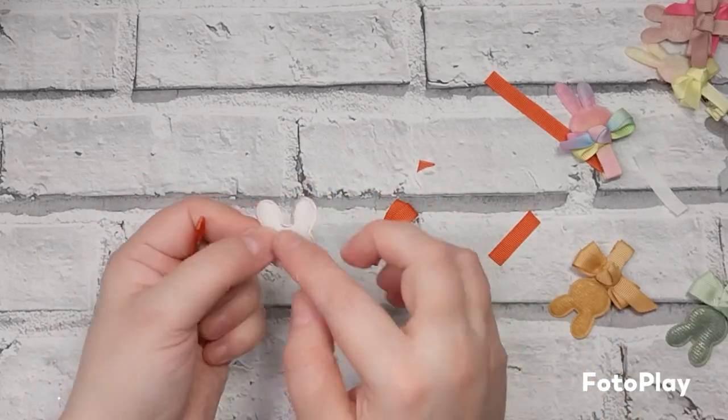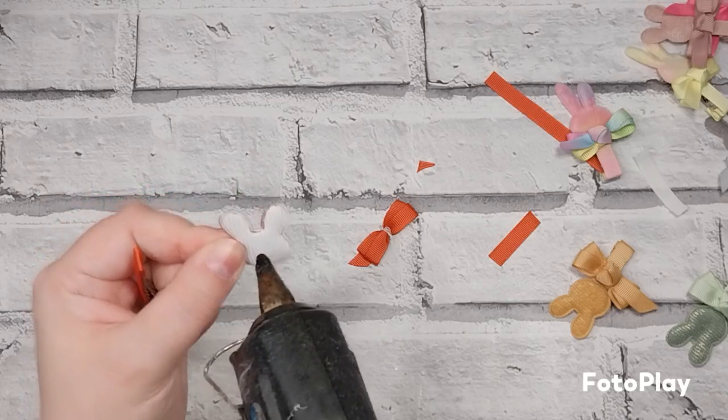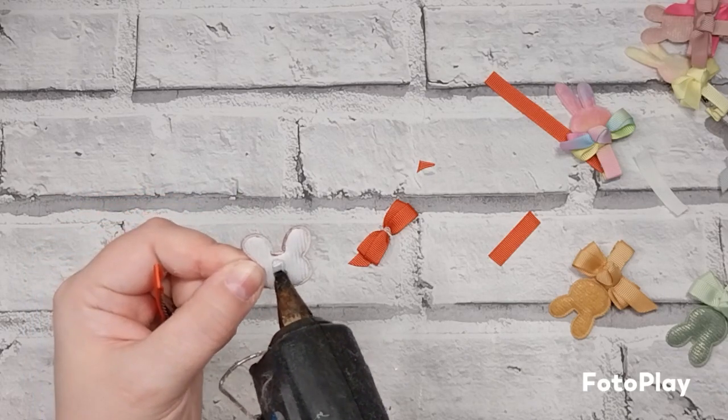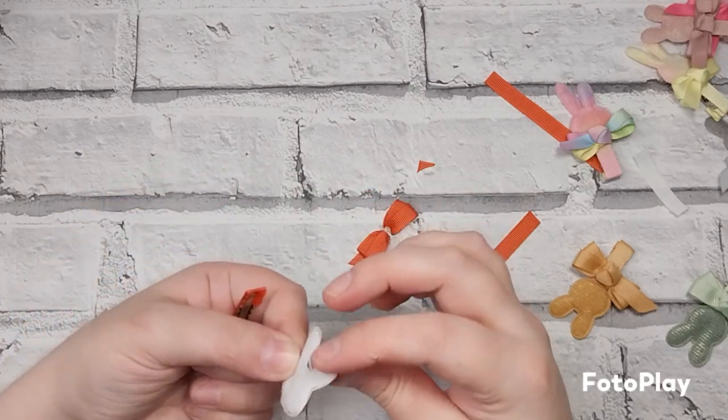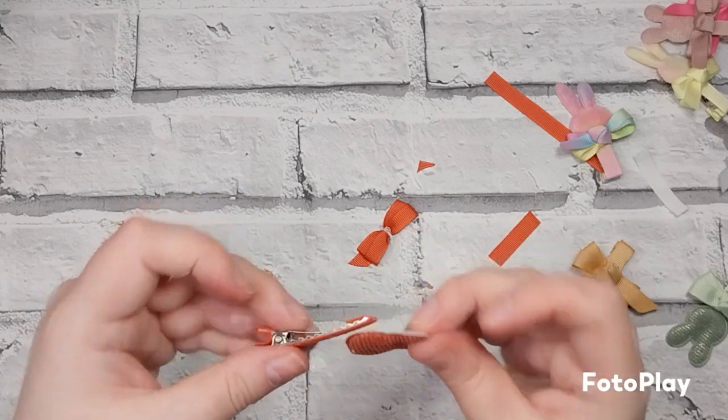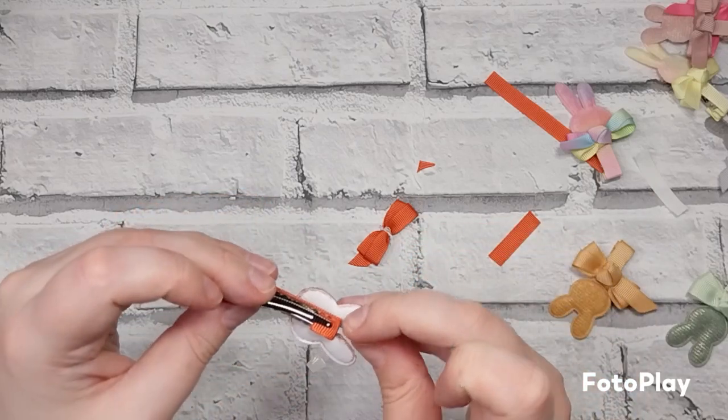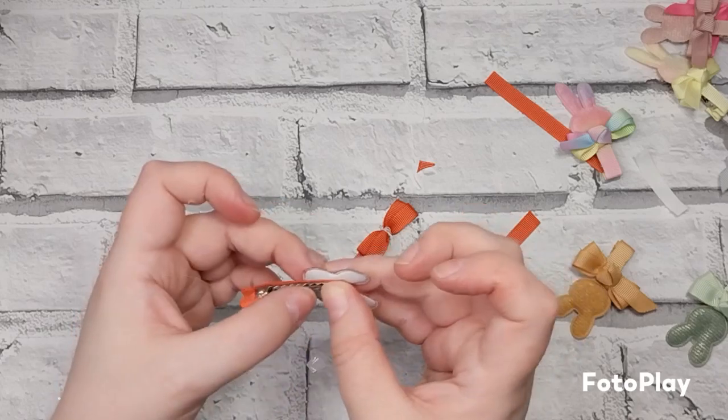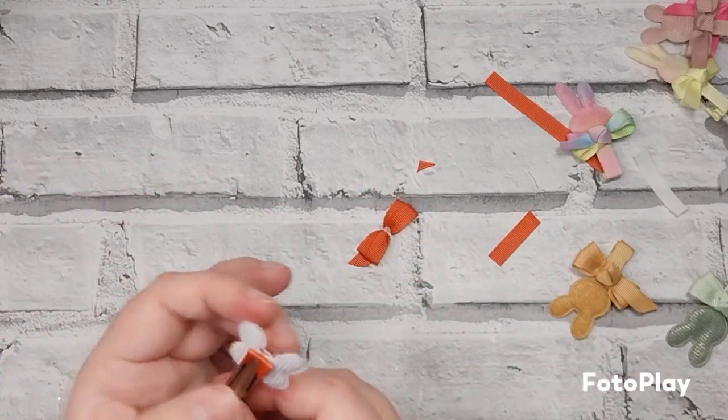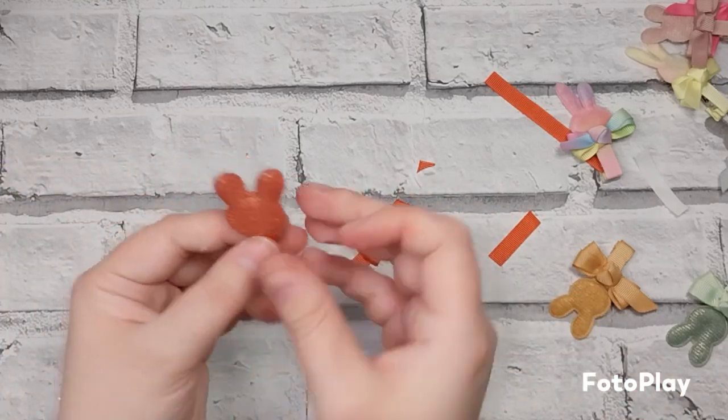Now glue here on the bunny, right down the middle of the ears, and attach that to the clip.